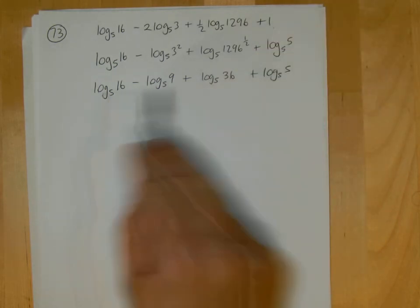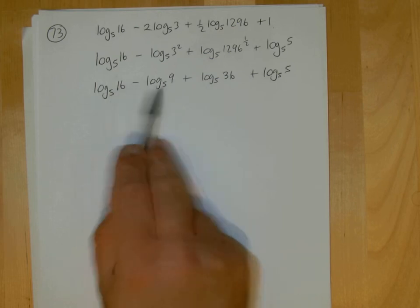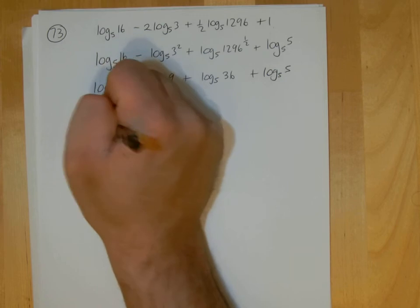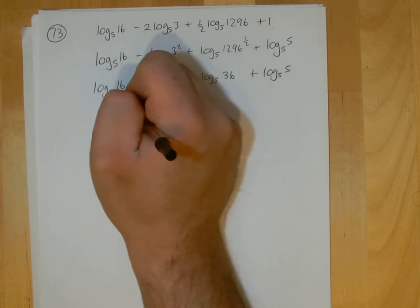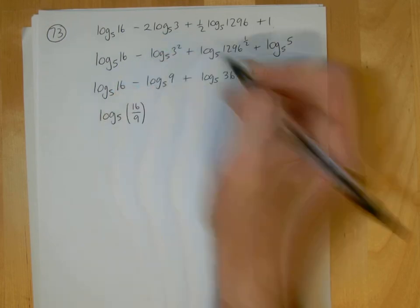And what you should do here is work left to right. So here now, you've got these two terms and we've taken away. So you need to write that as a single logarithm. Because you're taking away, you put them together as a single logarithm and you divide the terms.